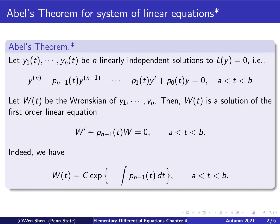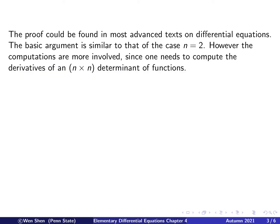My apologies. There's a wrong sign here. This is actually a plus. So how about proving the theorem? The proof could be found in most advanced texts on differential equations. The basic argument here is similar to the one we used for the case n equals 2, but since here n is bigger than 2, then the computations are somewhat more involved. And we will need to also compute the derivatives of a determinant of n times n matrix. But all those are actually rather feasible, so let's try to prove it.